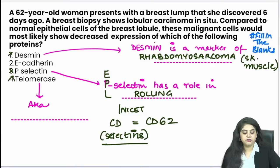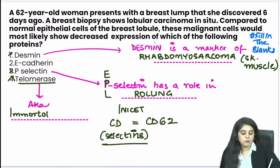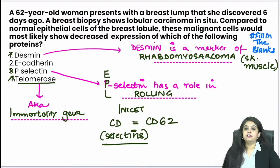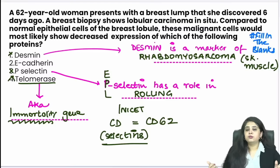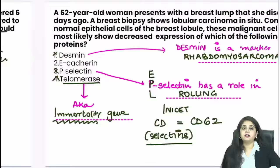Telomerase: also known as the immortality gene. If we have a lot of telomerase, we become immortal — we live like those people you see on news who are 150 years old. Telomerase is the immortality gene. So all other options are settled. This was a classical case of E-cadherin / CDH1 mutation causing lobular carcinoma. Done.